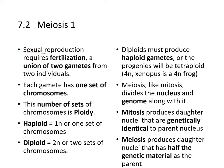Sexual reproduction requires fertilization of two gametes. Gametes are produced through meiosis, and each gamete must have one set of full chromosomes. The number of sets of chromosomes is called ploidy. Haploid (1N) has one set; diploid (2N) has two sets. Diploids must produce haploid gametes, otherwise progeny will be tetraploid — an example being Xenopus, a 4N frog.